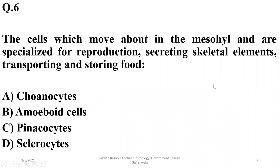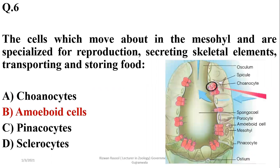The cells which move about in the mesohyl and are specialized for reproduction, secreting skeletal elements, transporting and storing food—they are known as amoeboid cells. So the right option is beta. Amoeboid cells are found in mesohyl and they're responsible for secretion of skeletal elements, reproduction, as well as transportation and storage of food.